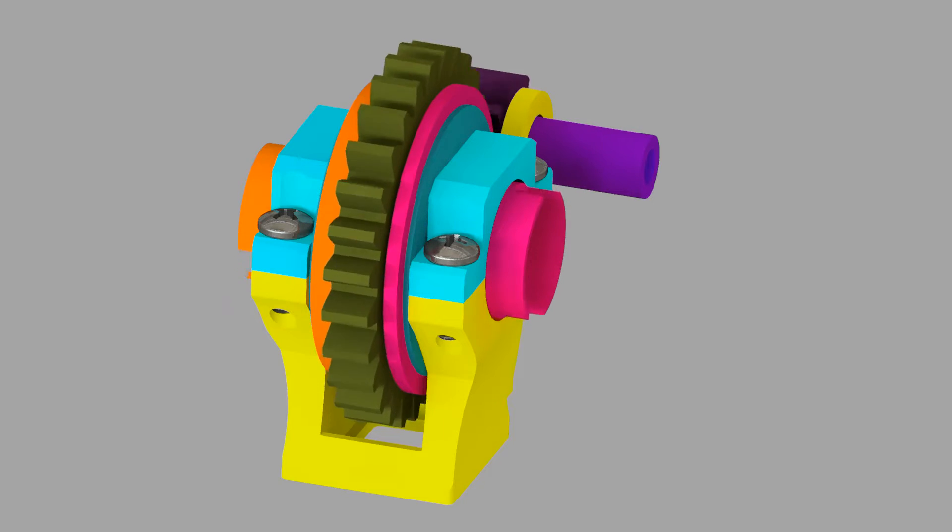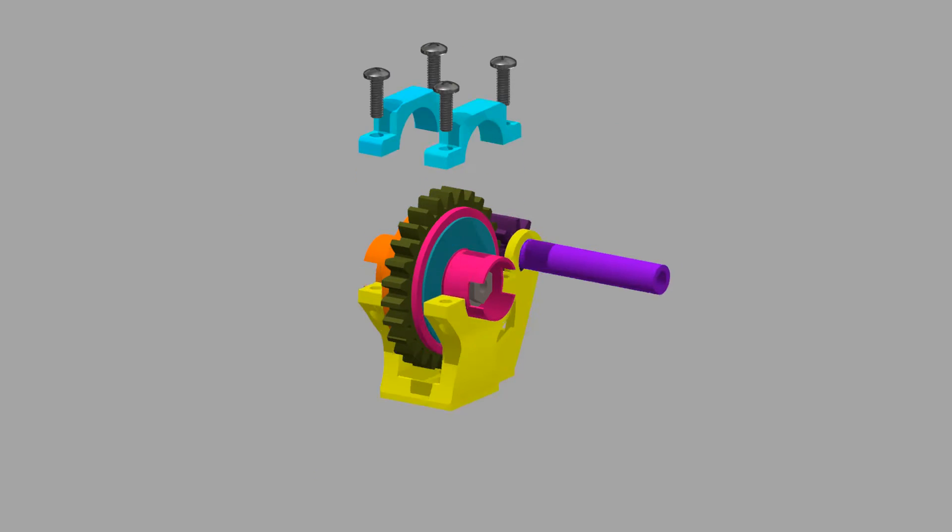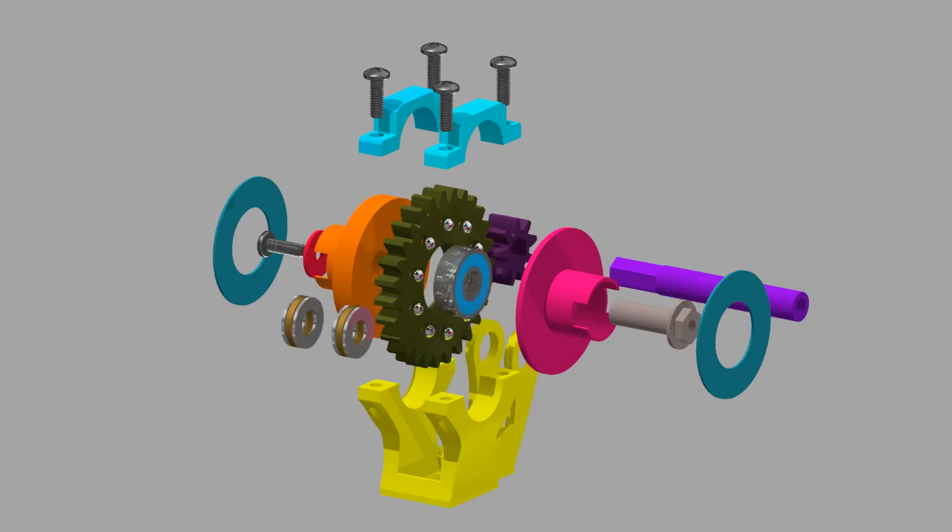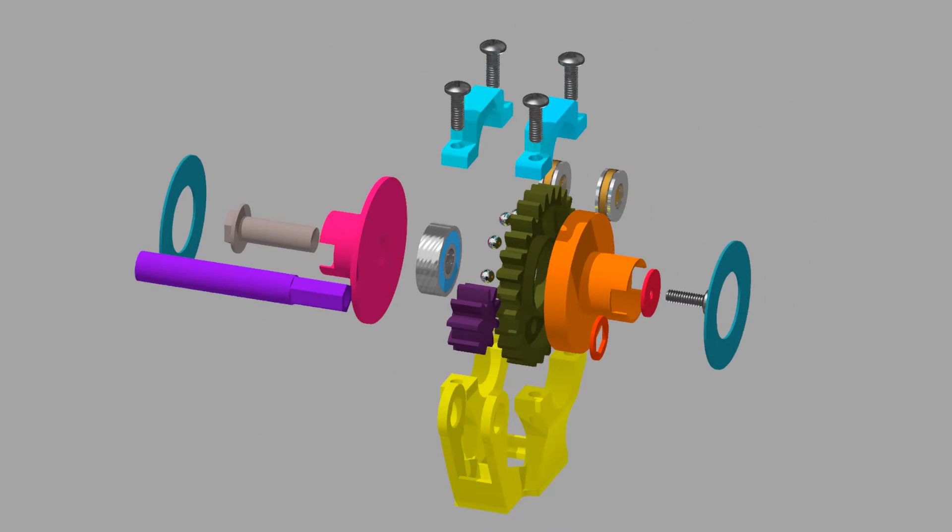It also all but requires the use of a set of thrust bearings to allow for proper operation and adjustability. This design uses 608 bearings as well as a set of thrust bearings and metal fasteners in addition to the 3D printed components.